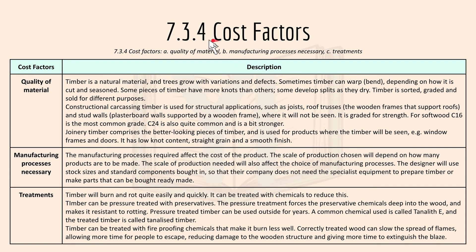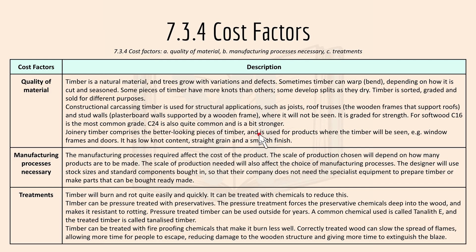Then we have 7.3.4 cost factors, which include quality, manufacturing process, and treatment. Timber is a natural material, so it grows with variations and defects, and can warp depending on how it is cut or seasoned. Constructional carcassing timber is used for structural applications like joists or roof trusses and is graded for strength — for softwood, C16 is the most common grade and C24 is stronger. Joinery timber comprises better-looking pieces used for visible products like window frames and doors, requiring higher quality so it looks good on the outside.